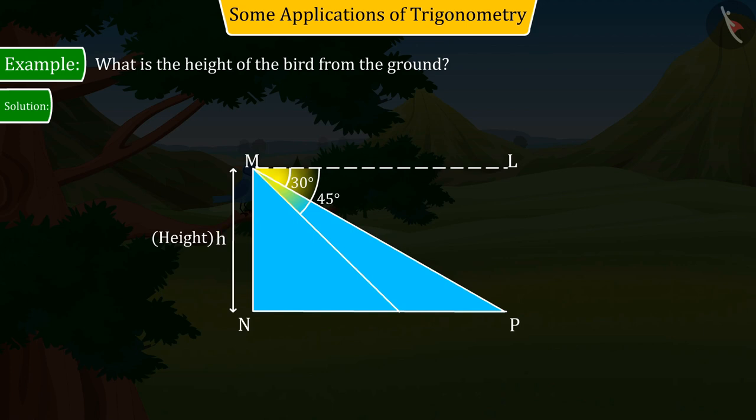And let's represent the first position where the rat is seated by point P. In that case, the angle of depression made by the line of sight and the horizontal line of the bird sitting on the branch is 30 degrees.